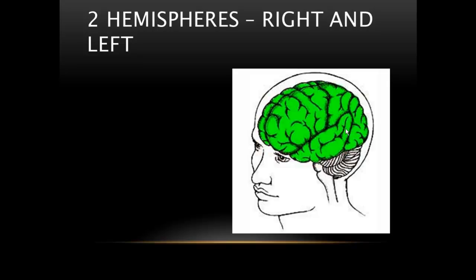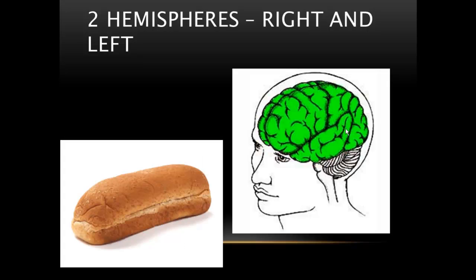So our brain has two hemispheres, the right and the left, and some of us might be more right brain dominated, which means that is the part of the brain that controls the left side of the body versus someone who's left brained, who predominantly resides in the control of the right hand side of your body.